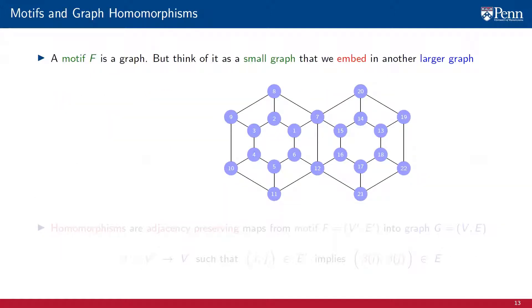A motif F is a graph. It can be any graph, but it is convenient to think of it as a small graph that we could embed into another, larger graph. An example of a motif is the star graph, which we show on the left, made up of a center node and three satellite nodes.